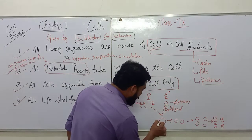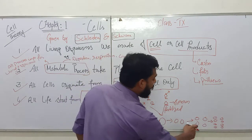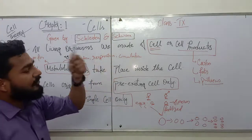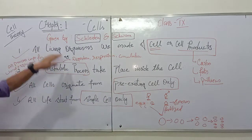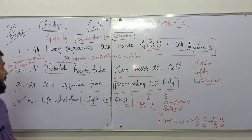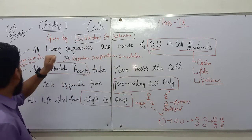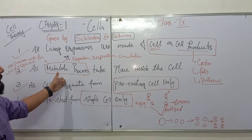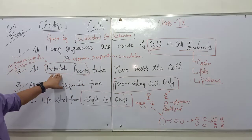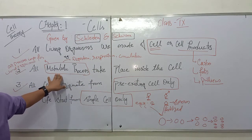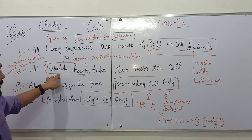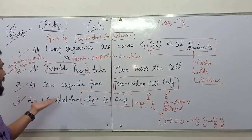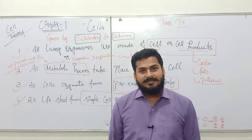This diagram shows both the third and fourth points clearly. The single cell divided into two, two into four, four into eight — illustrating that all cells originate from pre-existing cells only. To revise: cell theory was given by Schleiden and Schwann. First point: all living organisms are made of cells or cell products. Second: all metabolic processes take place inside the cell. Third: all cells originate from pre-existing cells only. Fourth: life starts from a single cell only.